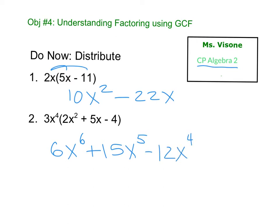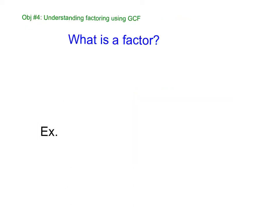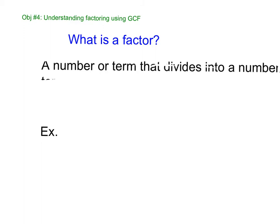So today we are going to be factoring using GCF. So real quick, factoring GCF is literally the opposite of the do now. Instead of multiplying everything out, I'm going to give you something like that and you have to write it as a distributed property problem. All right, so let's start with what is a factor?